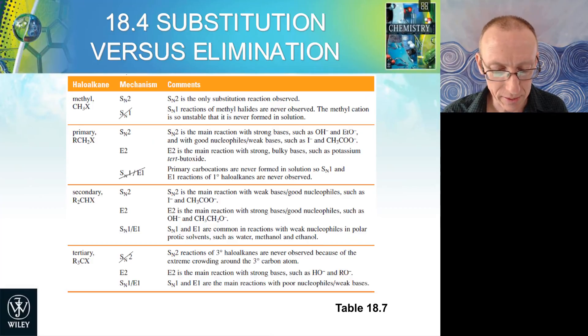So overall, we can look at some general guidelines and rules around substitution versus elimination. So methyl alkyl halides will undergo SN2 reaction and not SN1, and we can't get elimination because we don't have a carbon attached to that group bearing the leaving group. Primary alkyl halides will favor SN2 or E2, but we'll never get any of the SN1 or E1 because we can't form stable carbocations.